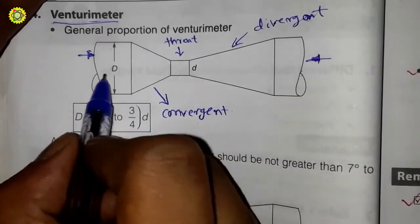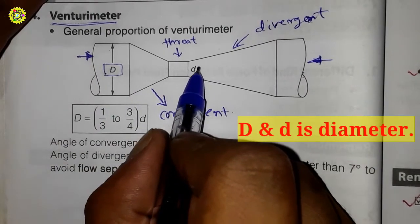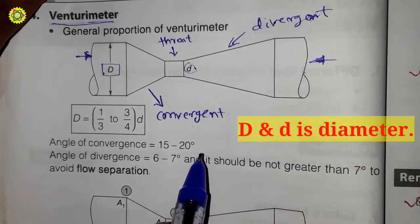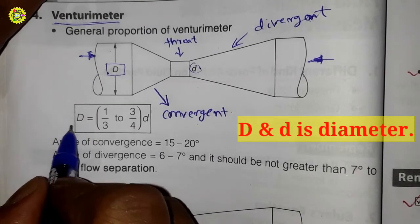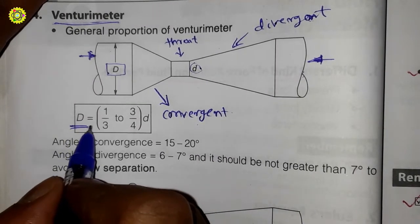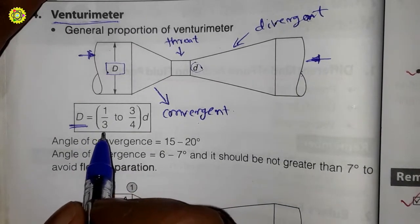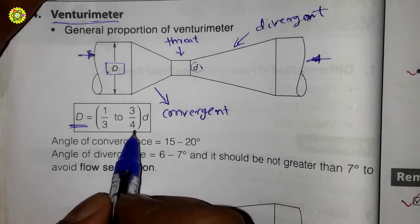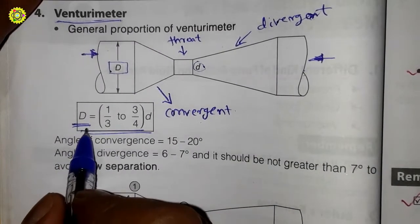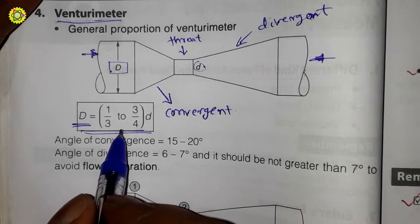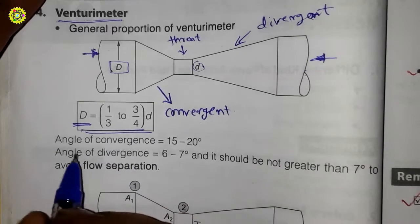The pipe dimension is capital D and the throat dimension is small d. Remember, capital D is always equal to 3/4 times small d — so capital D equals (3/4) × d.